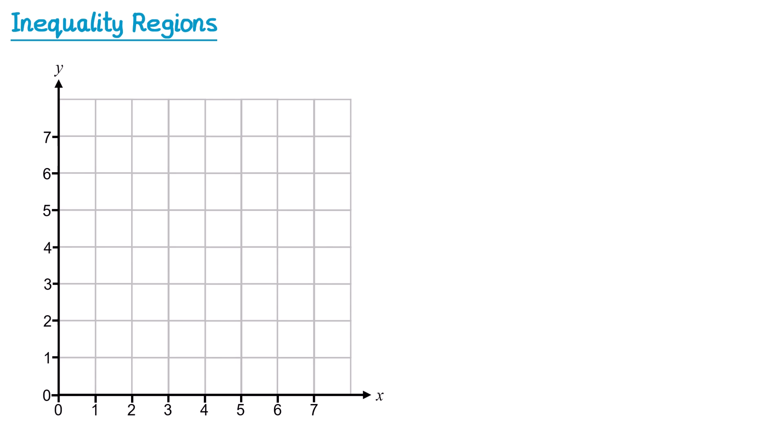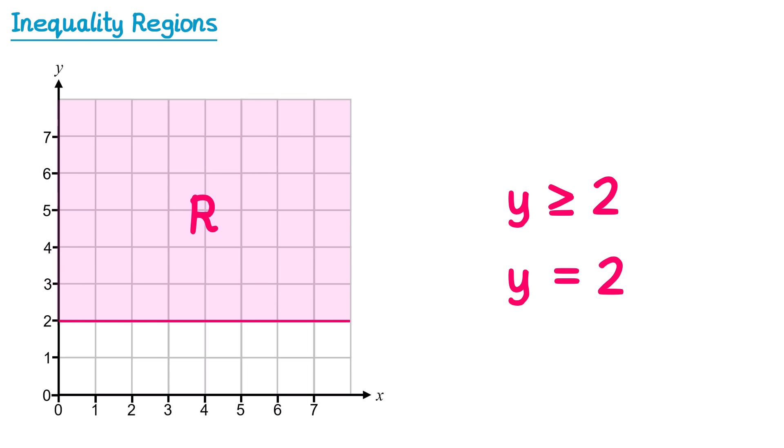Let's try a second example: y is greater than or equal to 2. We need to draw the line y = 2, which is a horizontal line through 2 on the y-axis. We want all y coordinates to be greater than or equal to 2 — so all points above this line, where y is 3, 4, 5, and so on. We shade this region and label it R.